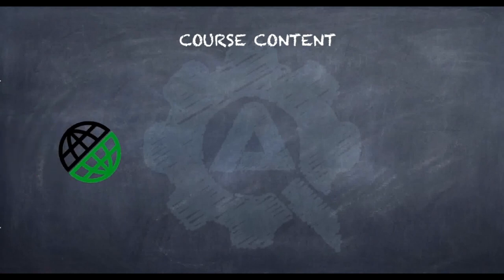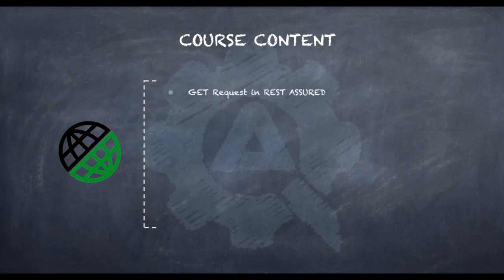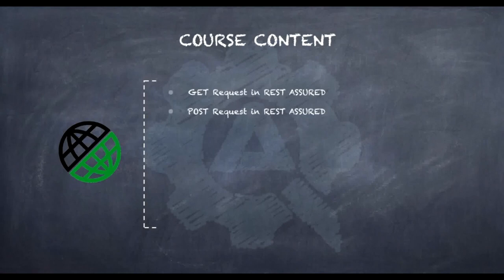The first thing we will be learning in API testing is the GET request in Rest Assured. The GET request is used to fetch resources which are located on the server. Once we have those particular resources, we need to confirm if those are the actual resources that we requested from the server — this is verification. Following that, we have the POST request in Rest Assured, which is used to send data to the server and save it.